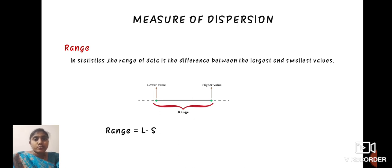First, we define range. In statistics, the range of data is the difference between the largest and smallest value. Range equals larger value minus smaller value.